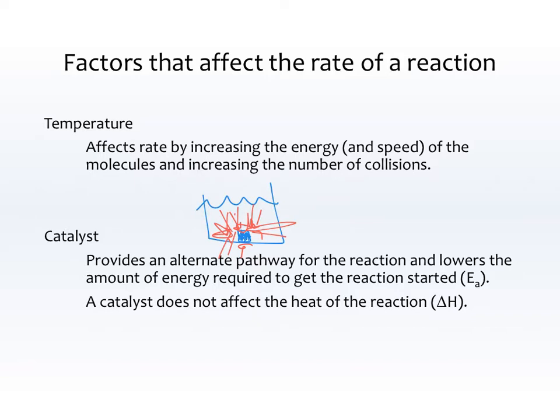Then we have a catalyst. A catalyst provides an alternate pathway for the reaction — kind of like a detour, a different way to get around it. It lowers the amount of energy required to get the reaction started, or the activation energy. A catalyst does not affect the heat of reaction. It doesn't change which reactants you start with or which products you end with; it just changes how the reaction moves.